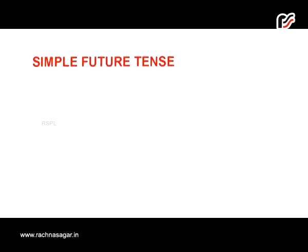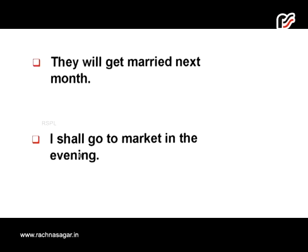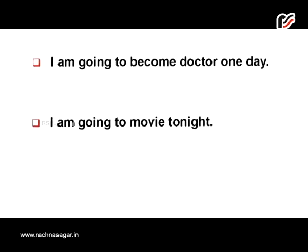Simple future tense: 'They will get married next month' and 'I shall go to the market in the evening.' There is no single specific way to express future tense; it can be expressed using shall, will, or going to. Shall is normally used with I. Going to is used to express future actions which have been decided before or which will take place in the near future — for example, 'I am going to be a doctor one day' or 'I am going to a movie tonight.'